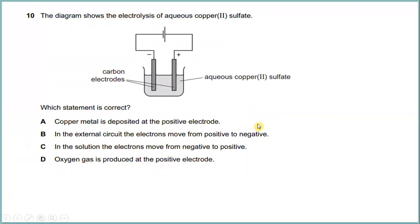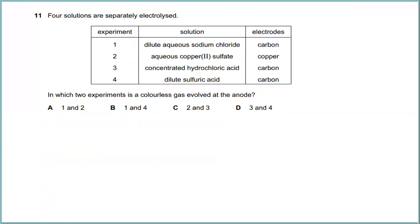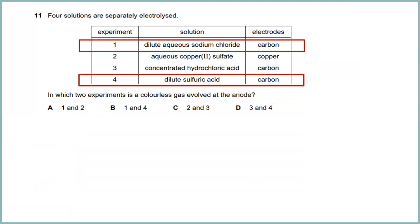Question ten: the diagram shows the electrolysis of aqueous copper sulfate. The correct statement is that oxygen gas is produced at the positive electrode. Question eleven: four solutions are separately electrolyzed. Which two experiments involve a colorless gas produced at the anode? The answer is experiments one and four, which is B.